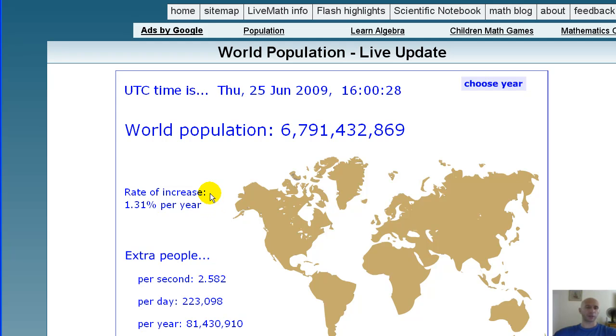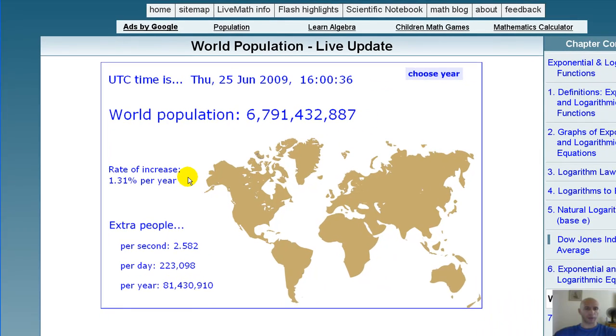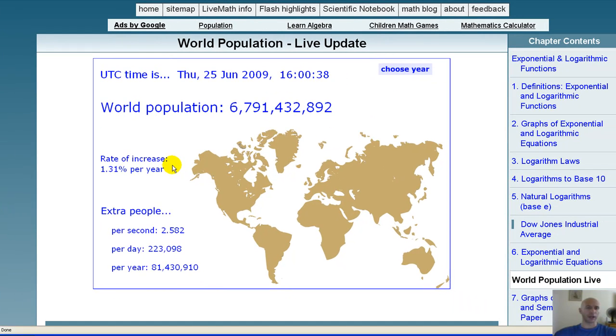Remember, rate of increase is related to the derivative. Derivative represents a rate of change, which can be a rate of increase as well. So this actually represents the derivative at this instant in time. Down below, it's kind of interesting to note, it tells you how many people per second are being added to the world, how many people per day, and how many people per year.